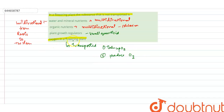So the correct answer to the question — in a flowering plant, the substance that is not transported — is oxygen. That is option number four.